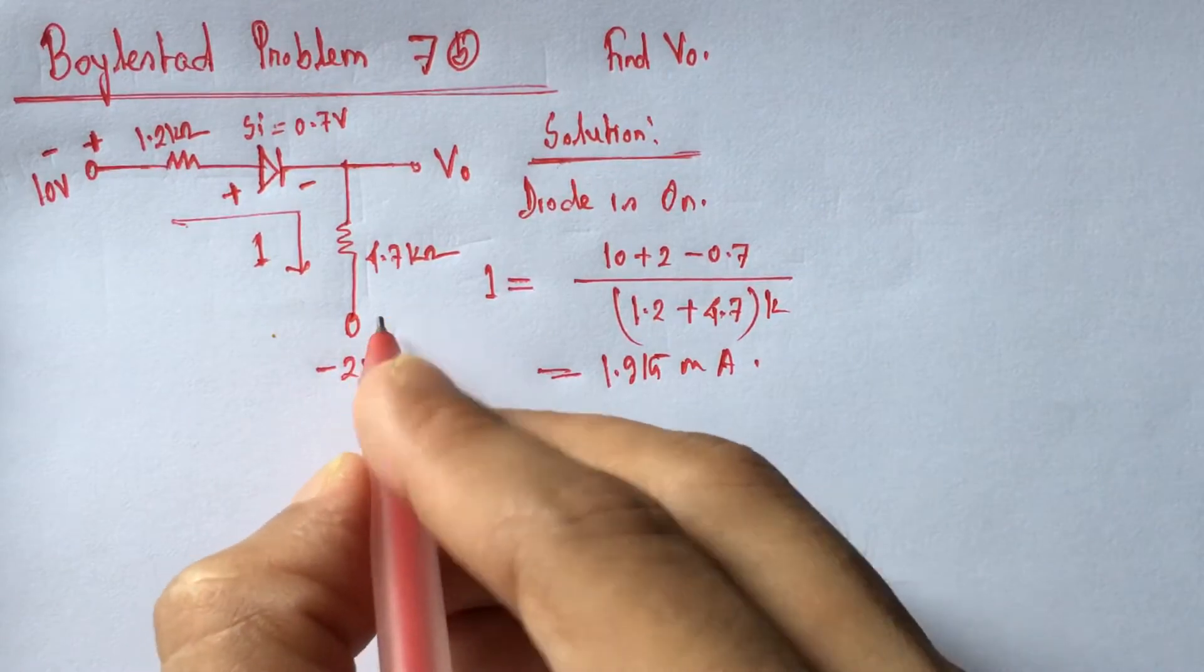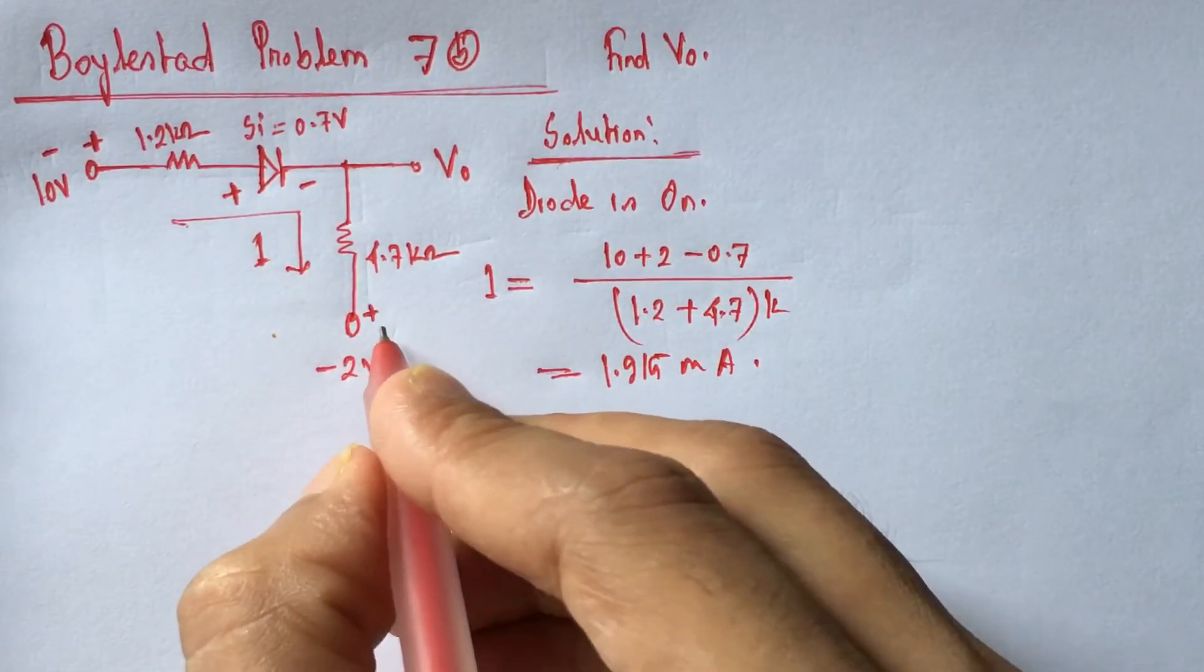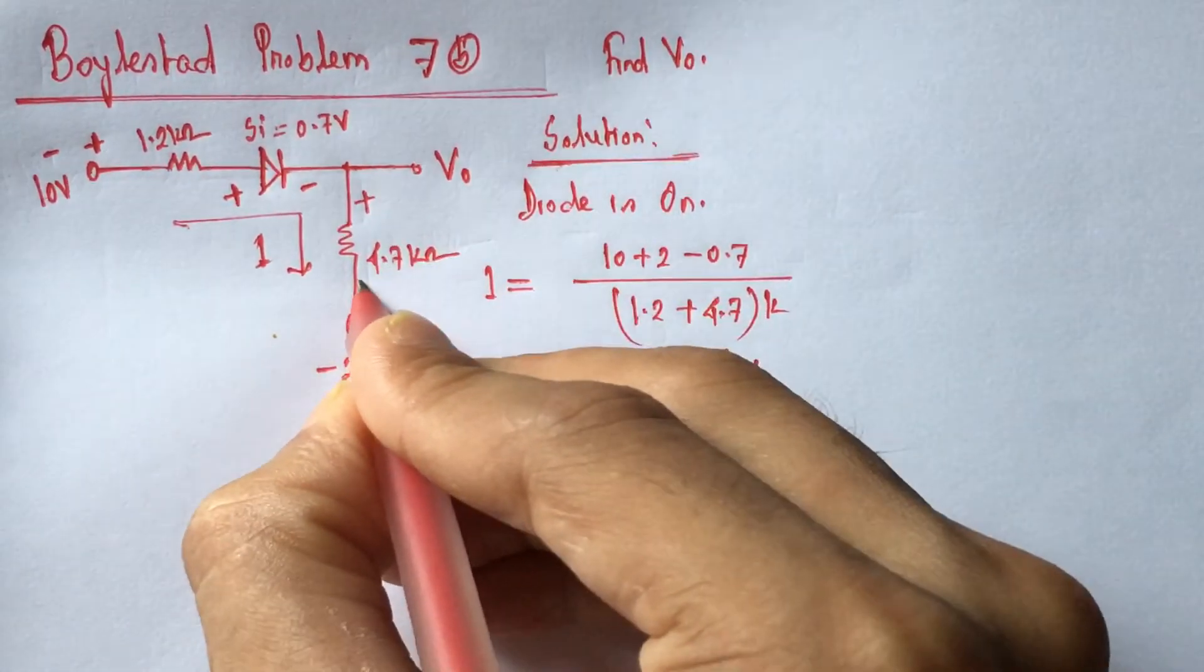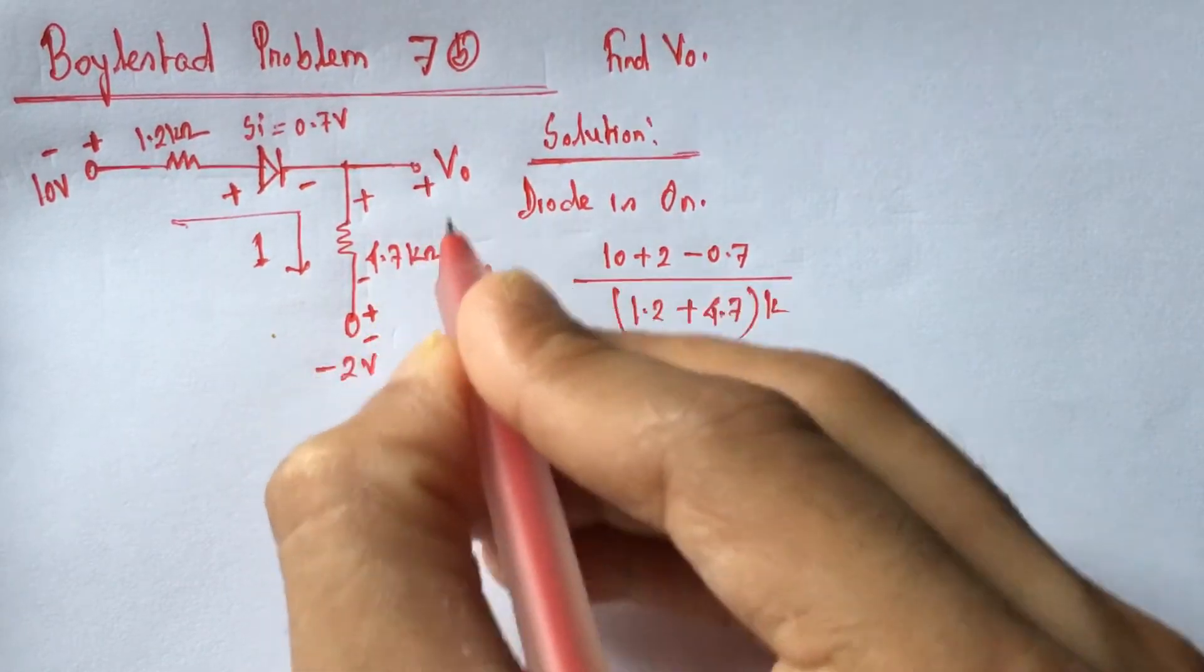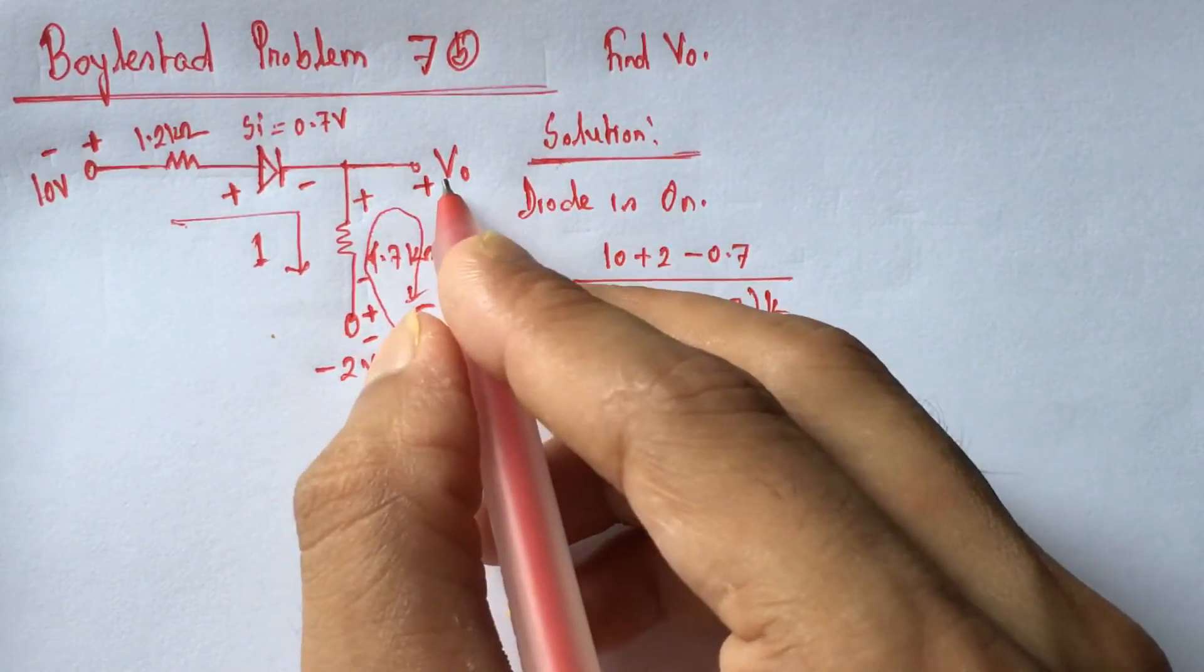Now, this is the positive polarity of this voltage. This is the negative polarity of voltage and this is the positive polarity, negative polarity, this is the positive and this is the negative. Now, we can run Kirchhoff's voltage law to find the voltage V0.